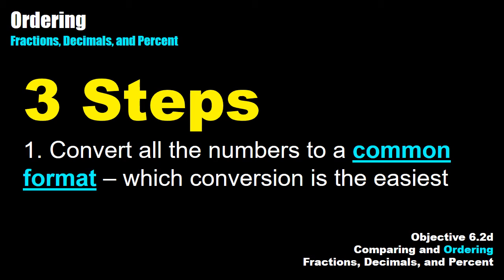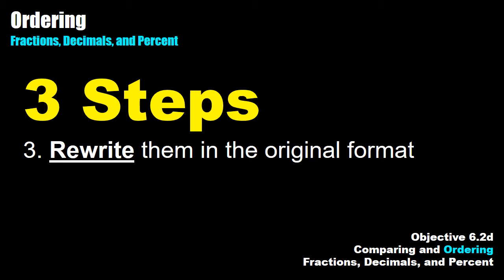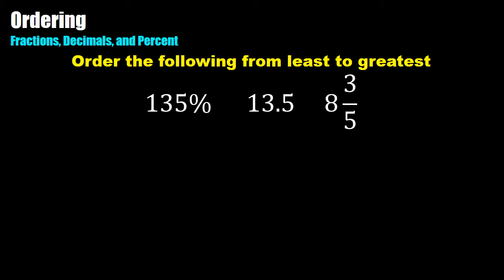So before we do that, we have some steps that are going to help you out — three simple steps, that's all you need. First step is that we're going to convert all the numbers to a common format. In converting numbers, we're just talking about rewriting the numbers in a similar format — the same number can be written three different ways. Then you're going to put them in the required order, which is either ascending or descending, and then you need to rewrite those numbers in the original format.